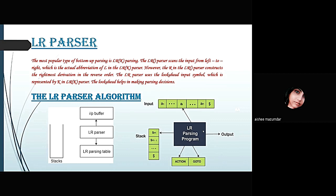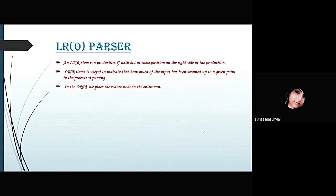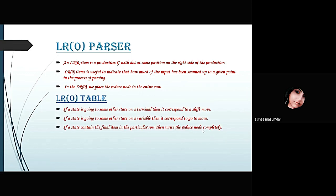Now I would like to go to the next slide about the LR0 parser. An LR0 item is a production with a dot at some position on the right side of the production. LR0 items indicate how much of the input has been scanned up to a given point in the parsing process. In LR0, we place the reduce move in the entire row. The steps for making an LR0 table are: first, if a state is going to some other state on a terminal, it corresponds to a shift move; second, if a state is going to some other state on a variable, it corresponds to a go-to move; third, if a state contains the final item, write the reduce move completely.